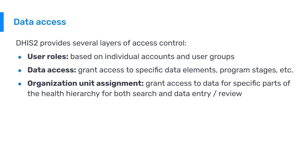Data access is what grants access to specific components within DHIS2. These can be very granular, whether to specific programs or even components of those programs, such as individual stages or certain data elements — giving you the tools to match limitations with the responsibilities of the individual. The user should also be assigned to specific organization units, which represent the level of the system they're working at and the location. They should have access to data relevant to where they work and their responsibilities, based on these three access control mechanisms.